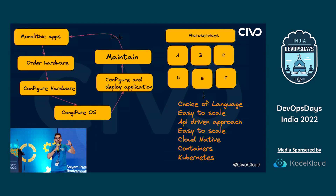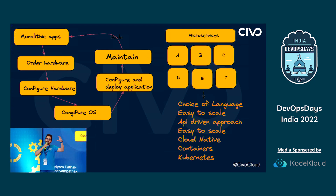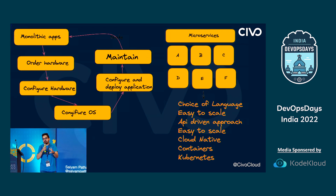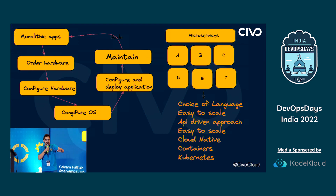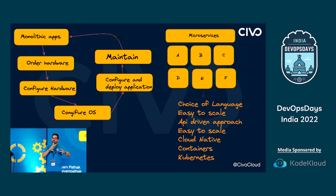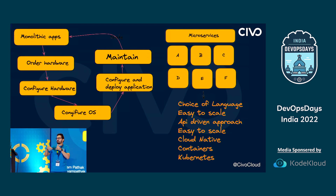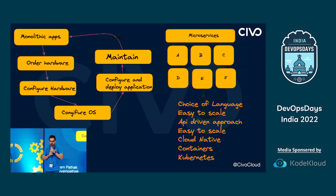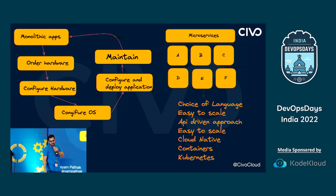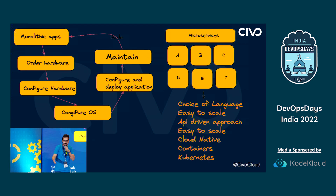I'll give you just an overview first. With respect to every shift that we are going through, there are new sets of challenges that come with any change. We were going from monolithic apps — traditionally you ordered the hardware, configured the hardware, then configured the OS, then deployed the application and maintained it. Then we moved into the world of microservices, with choice of language, easy to scale, and an API-driven approach.